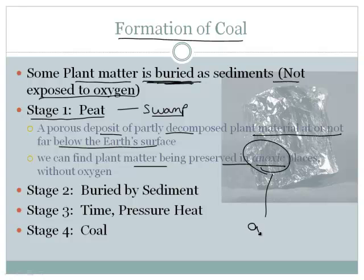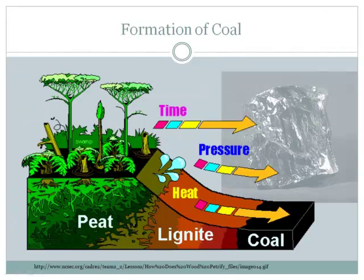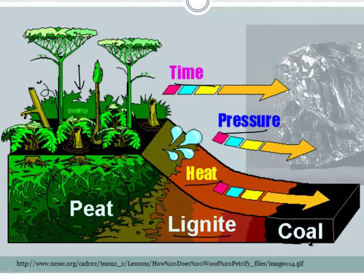Anoxic means without oxygen. Then the plant matter gets buried by sediment — lots of dirt of some variety. Then you apply time, pressure, and heat, and it turns into coal. This process takes many, many years — thousands, maybe even millions. Here's a picture: a swamp on the left produces peat, and then with heat, pressure, and time, it first turns into lignite and then turns into coal.